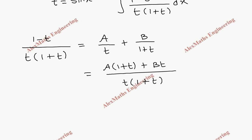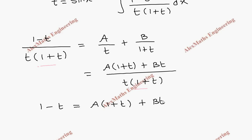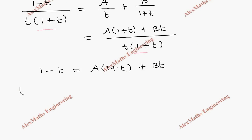Equating both numerators, since we have the same denominator, we get 1 minus t equal to A times (1 plus t) plus B times t. We need to substitute suitable values for t to find the constants A and B.